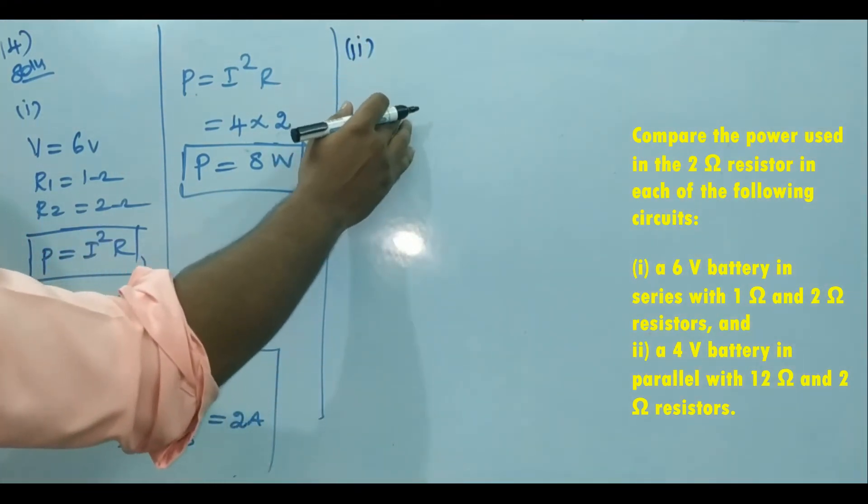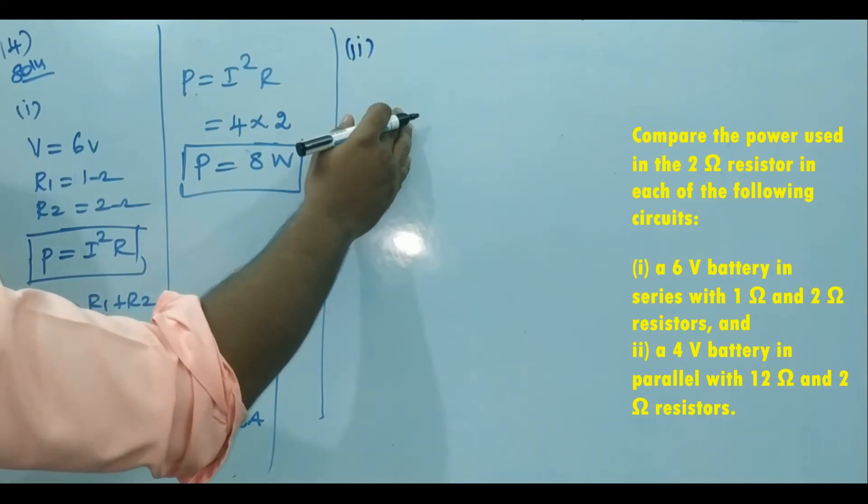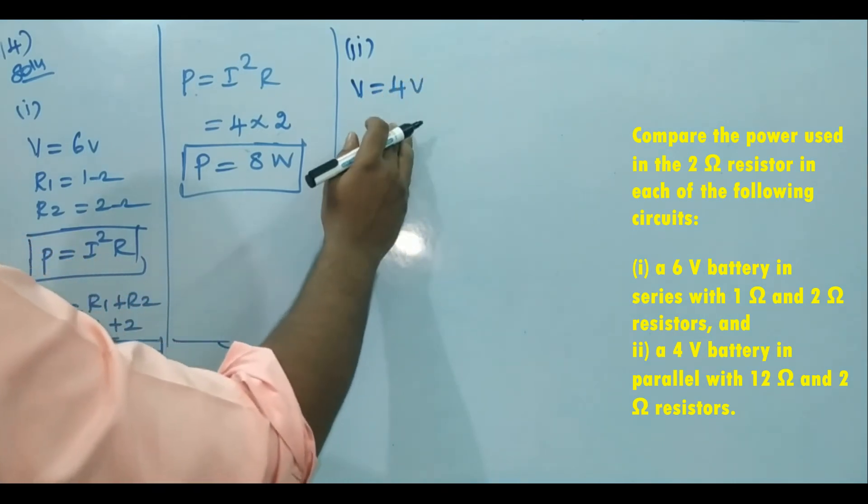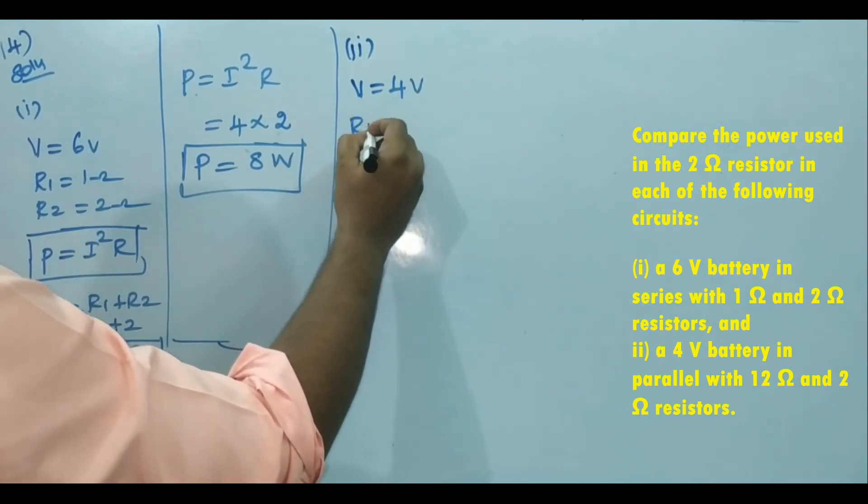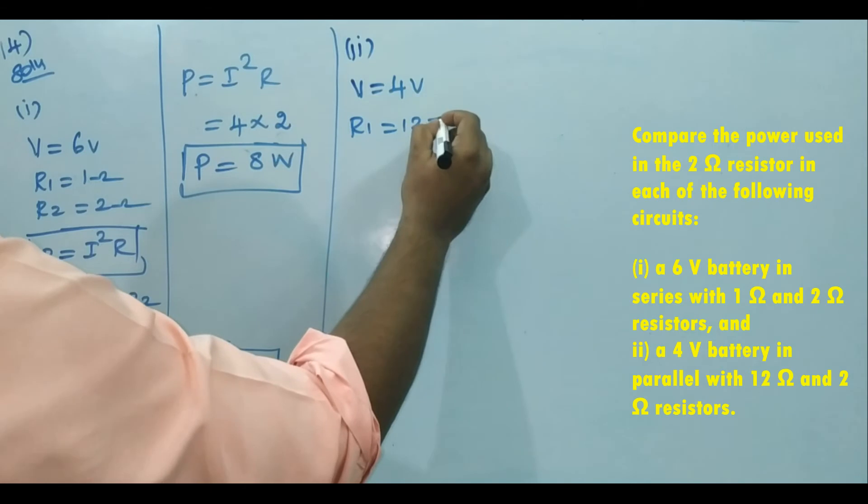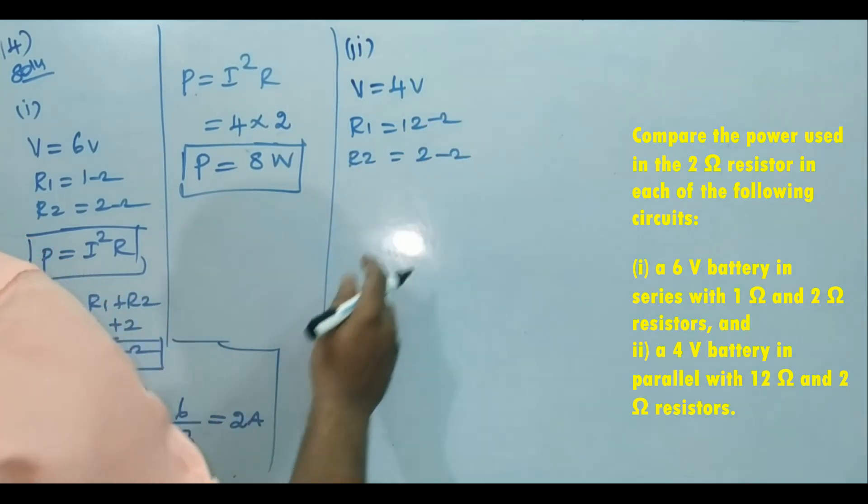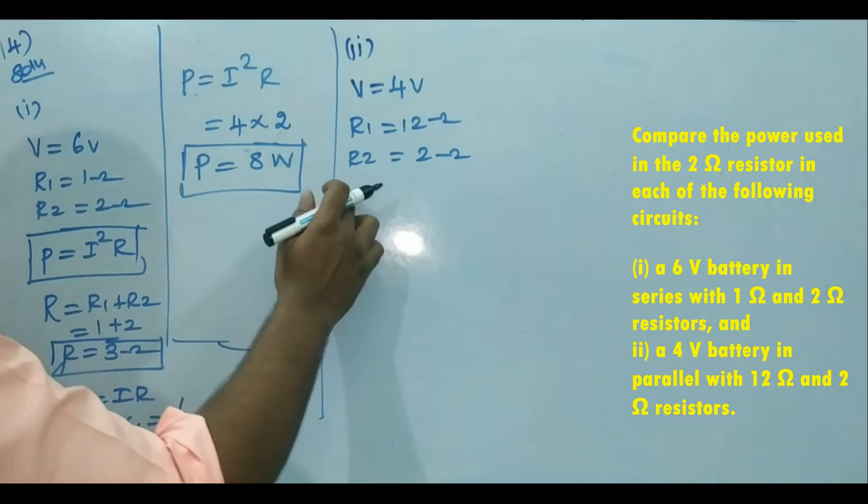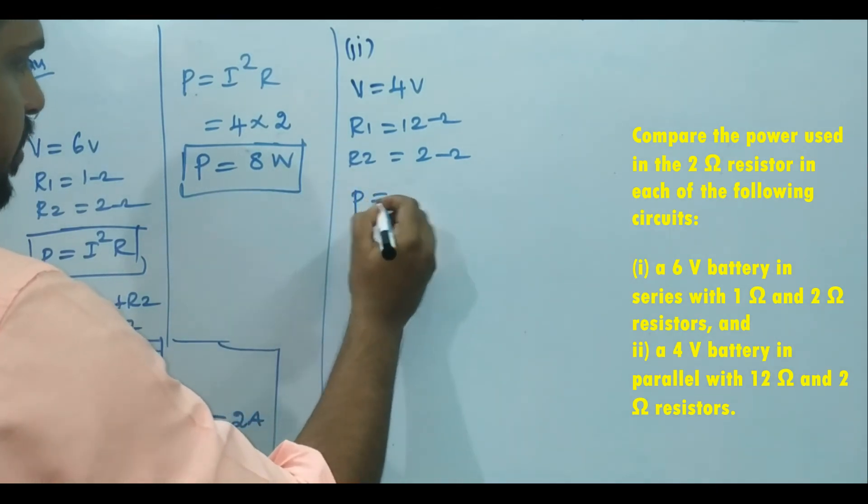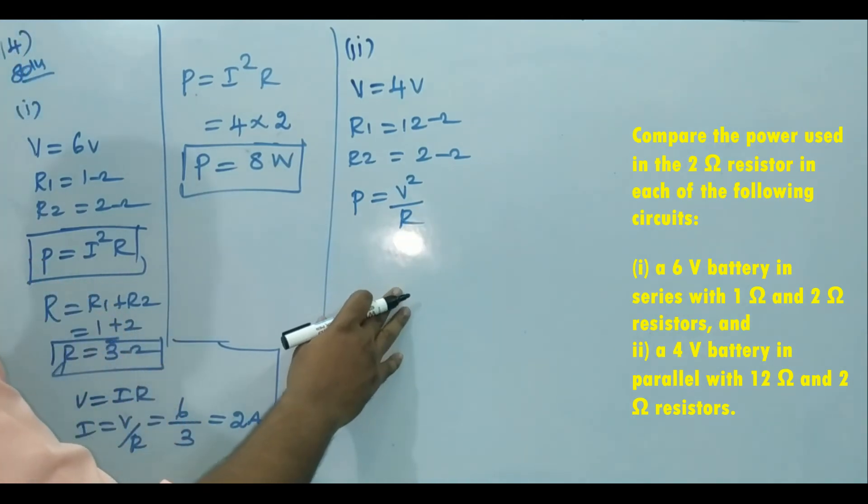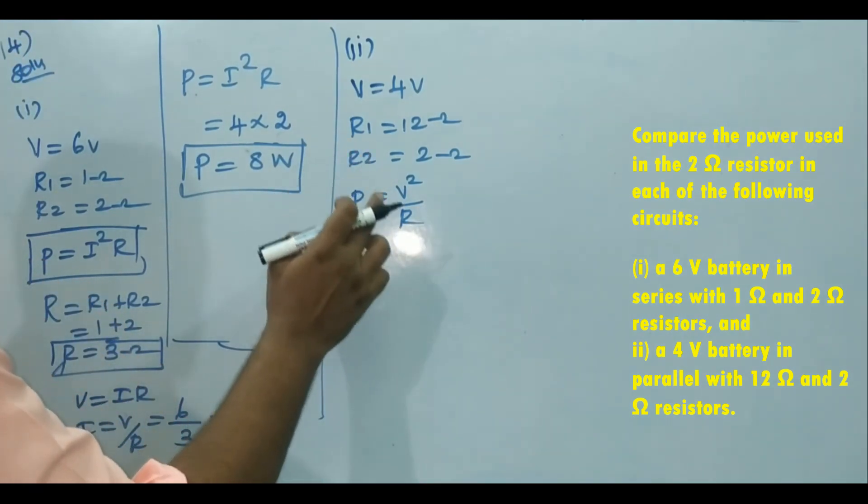Next, second subdivision. The 4 volt battery is in parallel with 12 ohm and 2 ohm resistors. So V is 4 volt, and the resistances are R1 is 12 ohm and R2 is 2 ohm. If resistances are connected in parallel, then power formula will be P is equal to V squared by R. That is the power formula, so R value is there, V value is there, directly we can substitute.